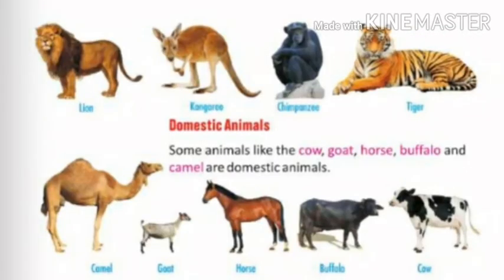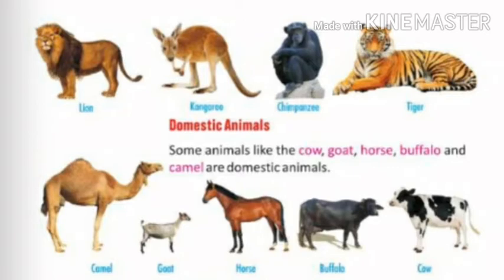Now we come to domestic animals. There are pictures of wild animals above — lion, kangaroo, chimpanzee, and tiger. The next topic is domestic animals. Some animals like cow, goat, horse, buffalo, and camel are domestic animals. They are called domestic animals because we see them around us, around our homes. In the pictures: first is camel, second is goat, third is horse, fourth is buffalo, and fifth is cow. We see these animals near us, around our houses, on roads, or on grounds — they are called domestic animals.